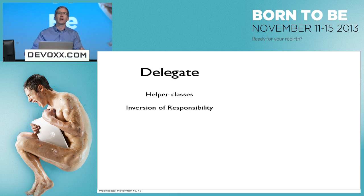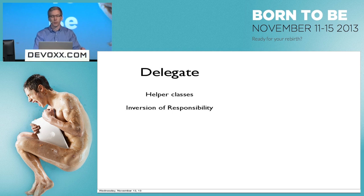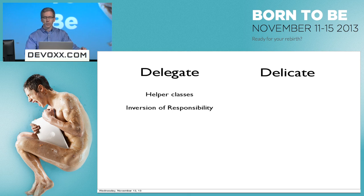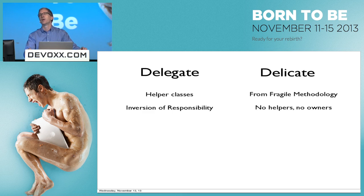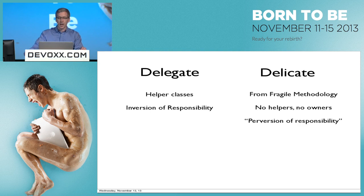First is the delegate pattern. This is about using helper classes to delegate responsibility down to these other classes, often referred to as the inversion of responsibility. On the other side is the delicate pattern — from the fragile methodology process. There are no helpers, no owners, and there's actually no responsibility whatsoever. It results in so much chaos and confusion that the resulting product is apt to break easily and non-deterministically.